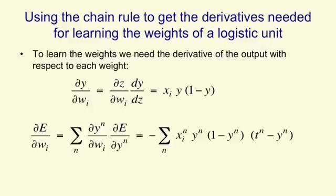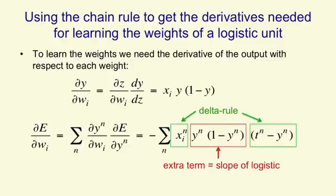dy by dz is y into 1 minus y. And so we now have the learning rule for a logistic neuron. We've got dy by dw, and all we need to do is use the chain rule once more, and multiply it by dE by dy, and we get something that looks very like the delta rule. So the way the error changes as we change a weight, dE by dwI, is just the sum over all the training cases n, of the value on an input line, xin, times the residual, the difference between the target and the output, and the actual output of the neuron. But it's got this extra term in it, which comes from the slope of the logistic function, which is yn into 1 minus yn. So a slight modification of the delta rule gives us the gradient descent learning rule for training a logistic unit.